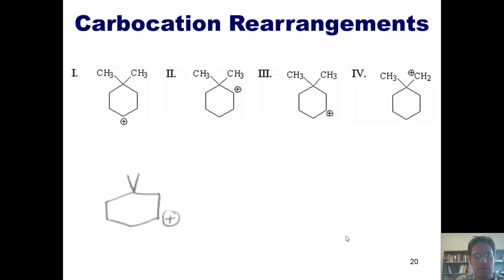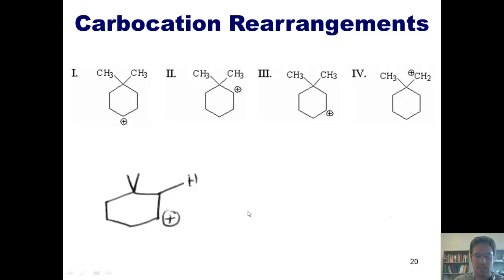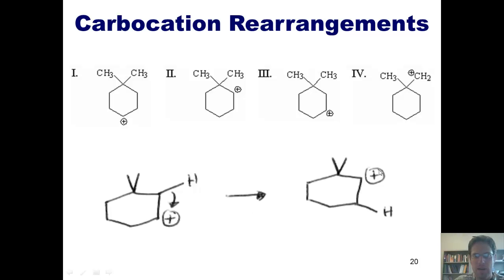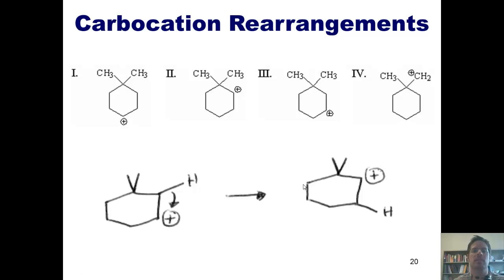Option three: I've got a secondary carbocation and I can have an adjacent hydrogen — the one on top or the one to the left — move over and plug that hole. By doing so, it leaves me a positive charge at that position. I've gone from a secondary carbocation to a secondary carbocation. Have things improved? No. So will this rearrangement occur? No.